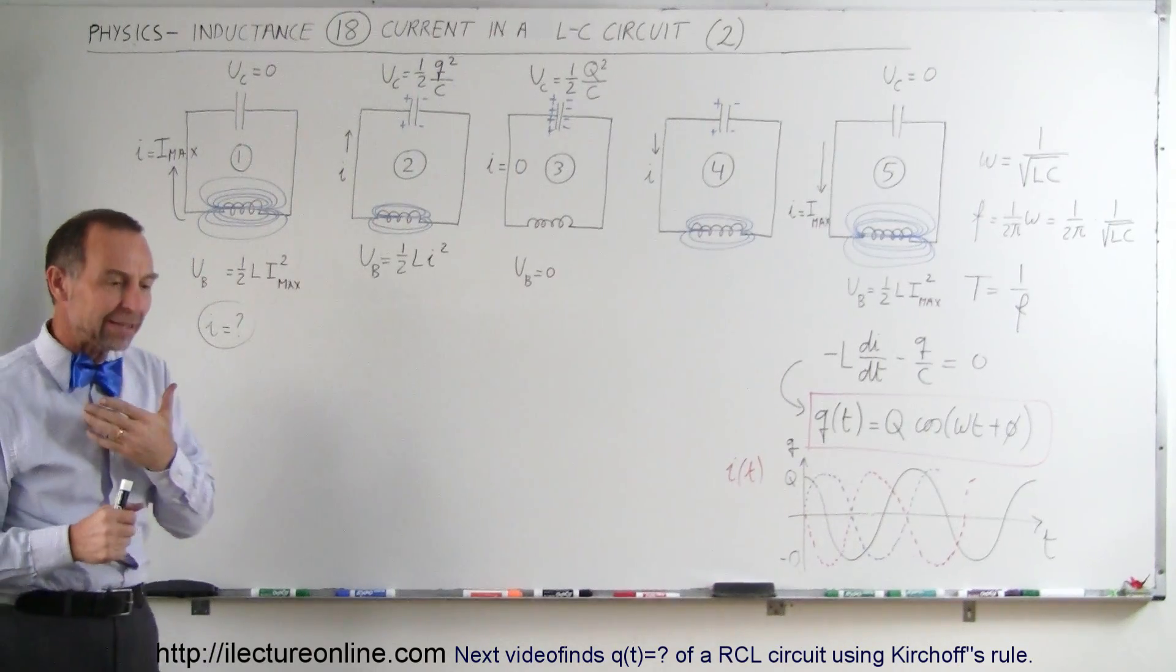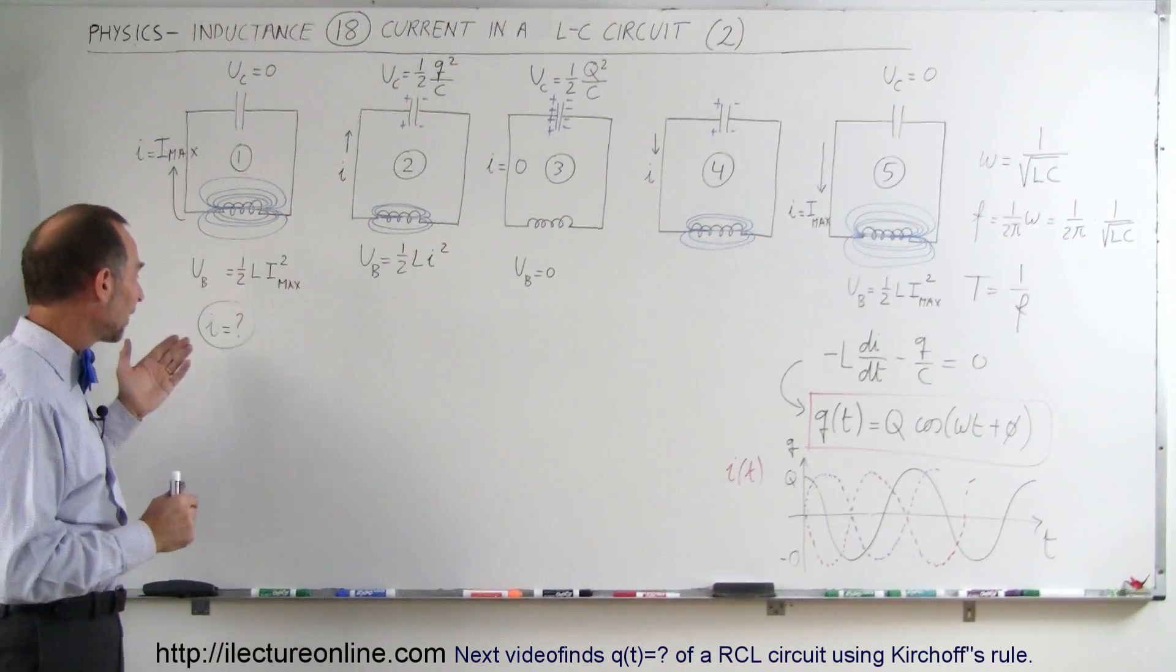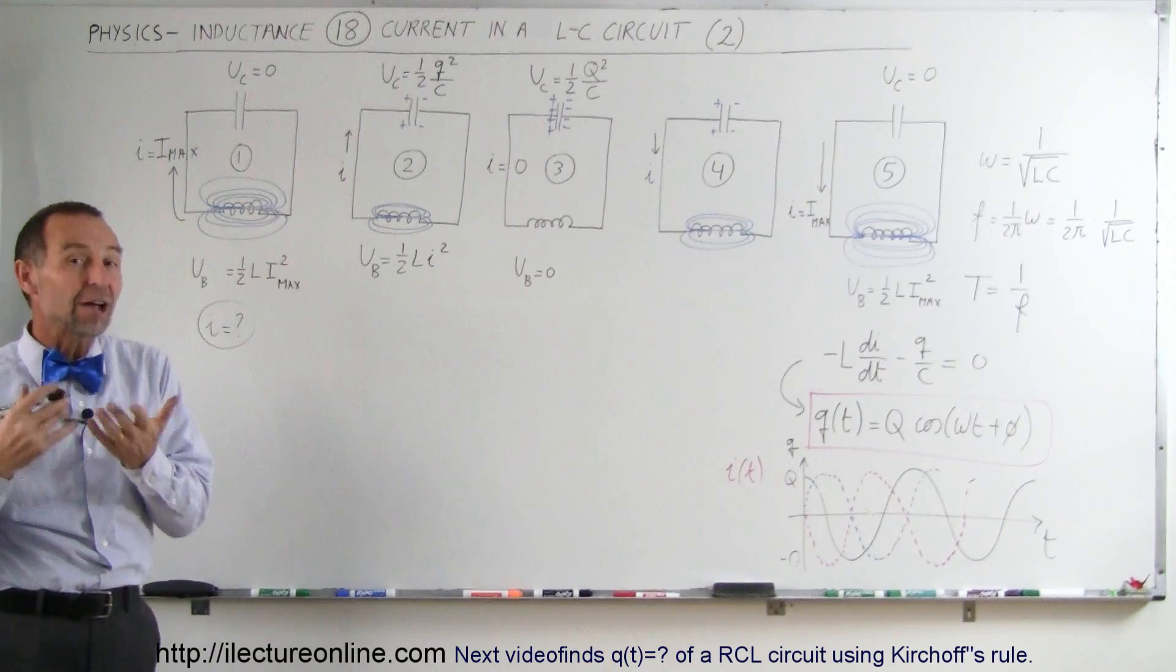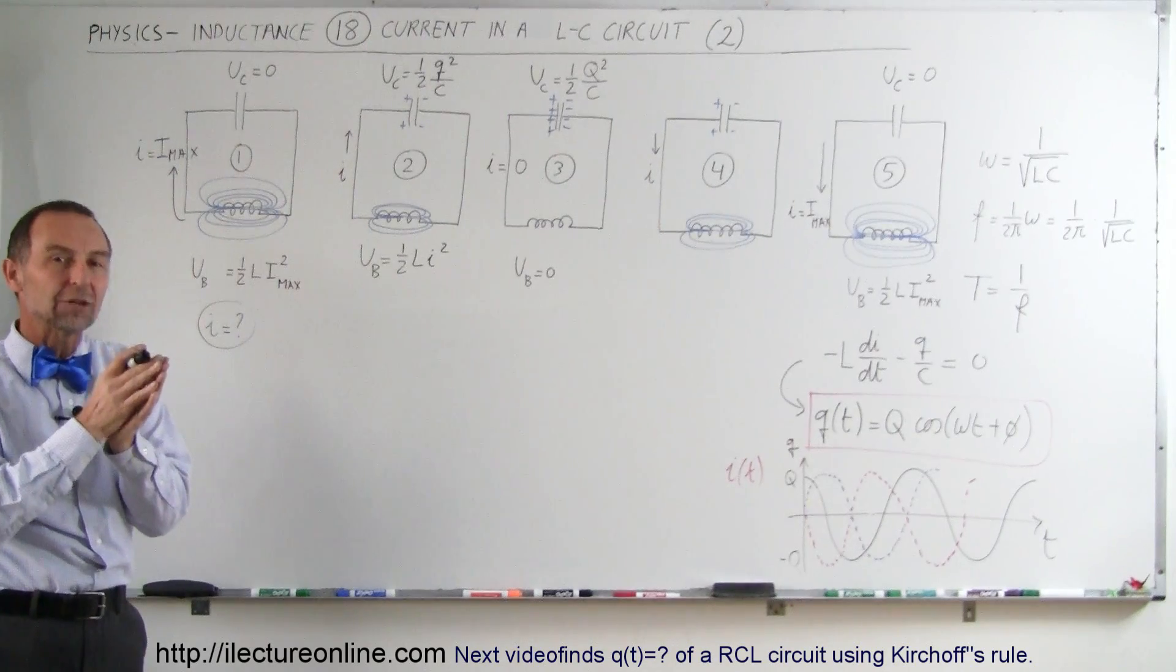Just like we can find the velocity of the mass on the spring that's oscillating back and forth, we can find the current in an LC oscillating circuit by assuming that the total energy is always conserved.